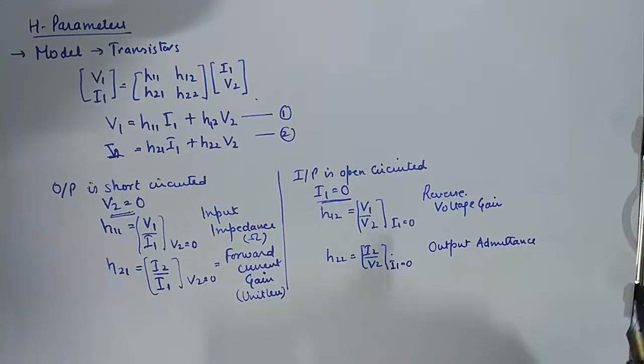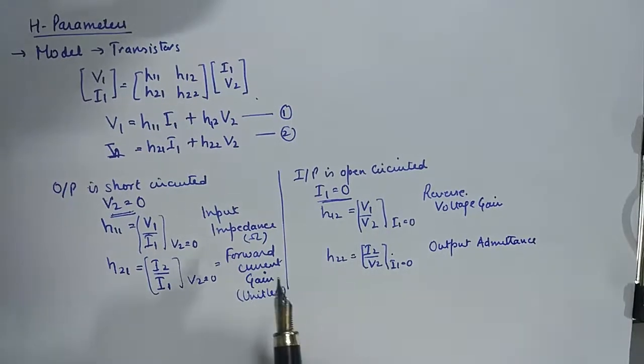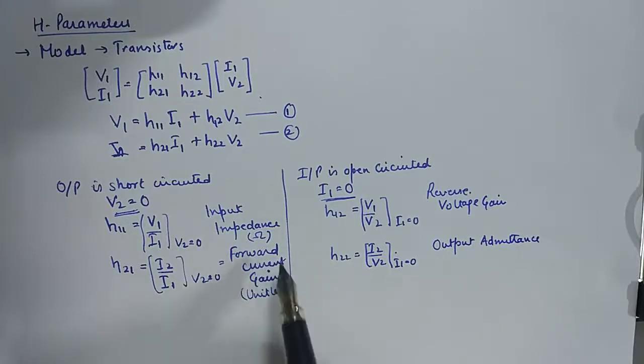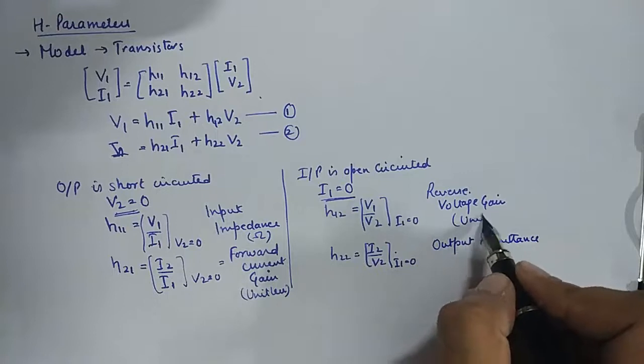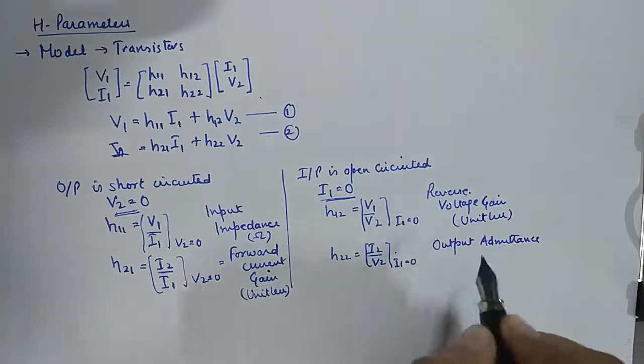So now you can see we've got a whole gamut of things here. We've got input impedance, then we've got forward current gain, reverse voltage gain and output admittance. So that's the reason these parameters are known as hybrid parameters. All of them have got a different set of units. So this is going to be unitless. Again, this is going to be mho.